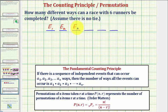The next event would be E sub three, the number of possible third place finishers given first and second have already been decided, and so on: E sub four, E sub five, and E sub six. Now we'll determine the number of ways each event can occur. The product of these numbers will give us the different ways the six runners can finish.